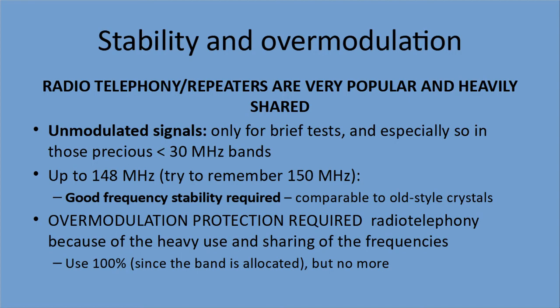Up to 148 megahertz, and try to remember 150 — that's a barrier. If you remember from lesson four, the amount of bandwidth you're allowed to use goes up when you're above 150 megahertz, so above 150 you can get into some pretty crazy stuff like fast scan TV. Up to that level, you have to have good frequency stability — that means a quality radio that's going to be right on the frequency, and that frequency should be comparable to old-style crystals. Overmodulation protection is required to prevent you from using more bandwidth than you require, because of the heavy use and sharing of those frequencies.